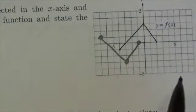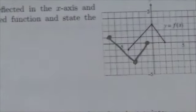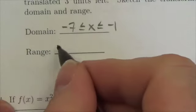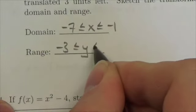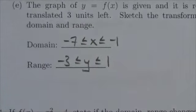My range—I go down to negative three and up to positive one. So negative three less than or equal to y less than or equal to positive one. That's the answer we're looking for.